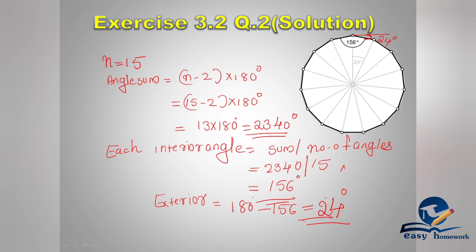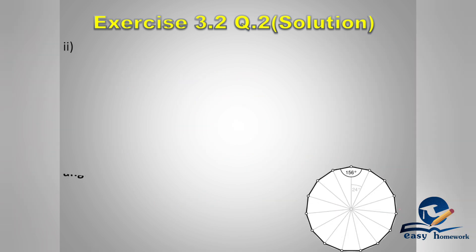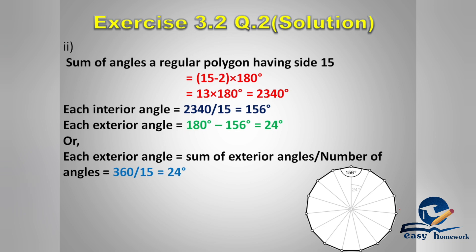We can also use the other method: sum of exterior angles divided by number of angles. The sum of exterior angles is always 360 degrees, divided by 15 angles equals 24 degrees. Both methods give the same answer of 24 degrees. Whether you use either method, the answer is correct.